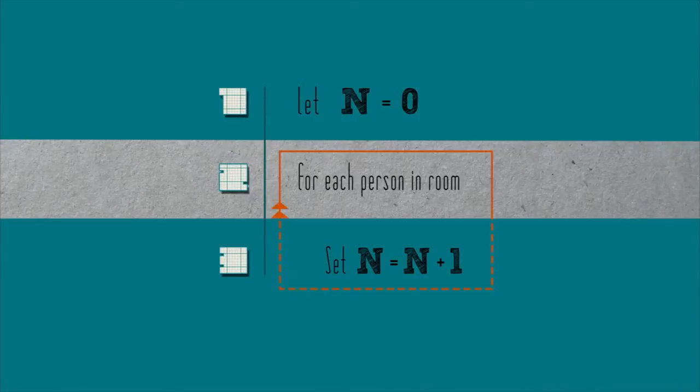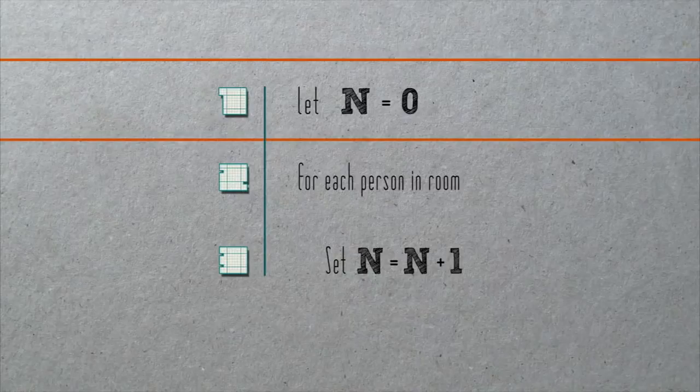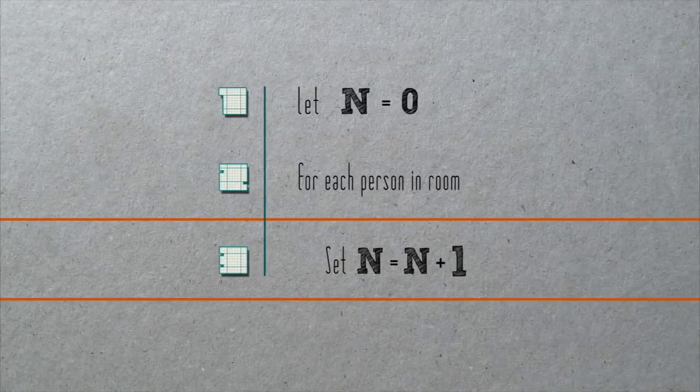Now, line two demarks the start of a loop, a sequence of steps that will repeat some number of times. So in our example, the step we're taking is counting people in the room. Beneath line two is line three, which describes exactly how we'll go about counting. The indentation implies that it's line three that will repeat. So what the pseudocode is saying is that after starting at zero, for each person in the room, we'll increase n by one.